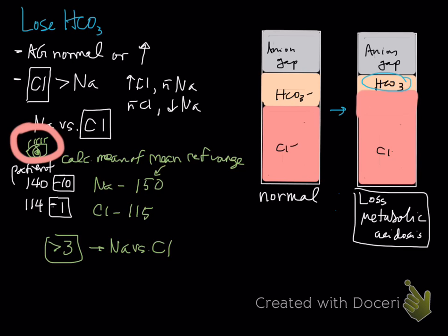You can have a concurrent secretional or loss metabolic acidosis with a titrational metabolic acidosis, where the anion gap would increase and you'd get a very low bicarb. If only one is present, we call that a simple disorder; having both would be a more complex disorder where more than one thing is occurring.